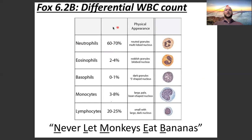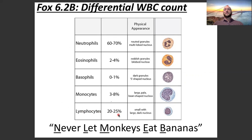Neutrophils make up 60 to 70% of white cells. They have neutral granules and multi-lobed nuclei. Eosinophils are 2 to 4%, with reddish granules and a bi-lobed nucleus. A mnemonic to help you remember is 'Never Let Monkeys Eat Bananas' — Never for neutrophils at 60-70%, Let for lymphocytes at 20-25%, Monkeys for monocytes. This is in descending order of prevalence.